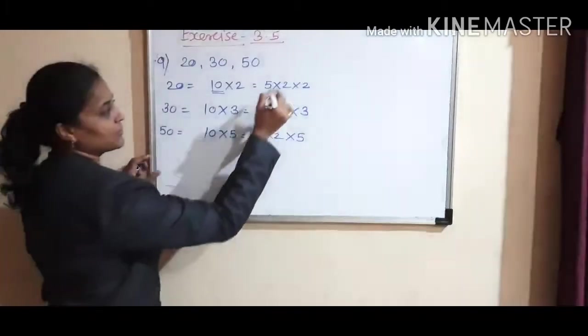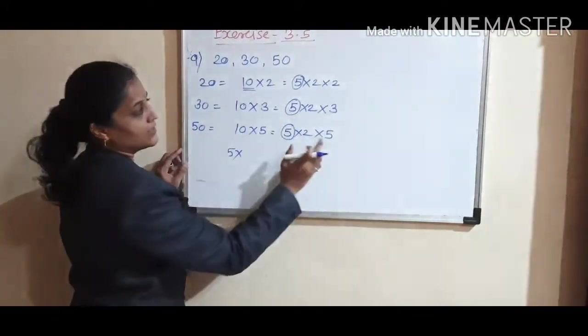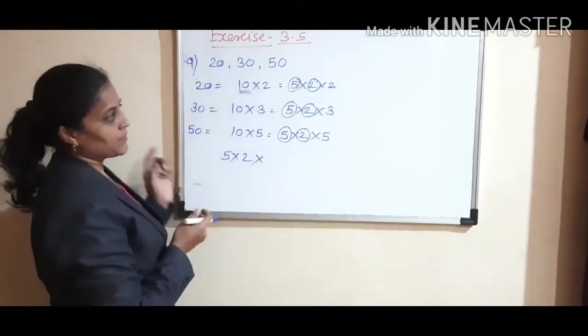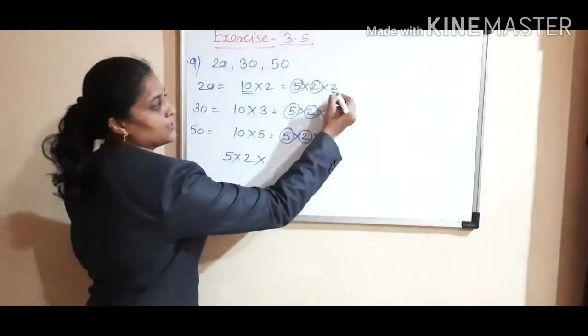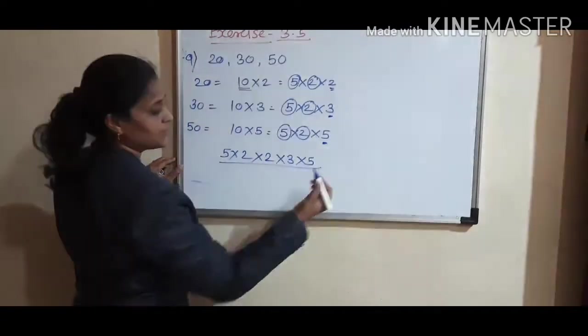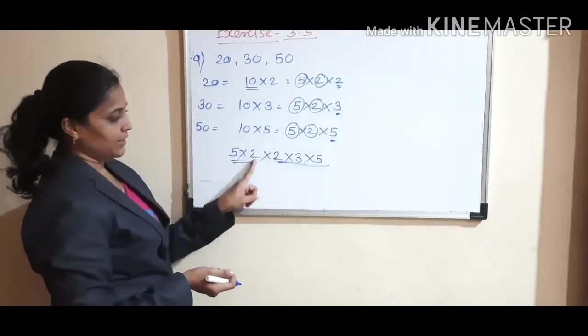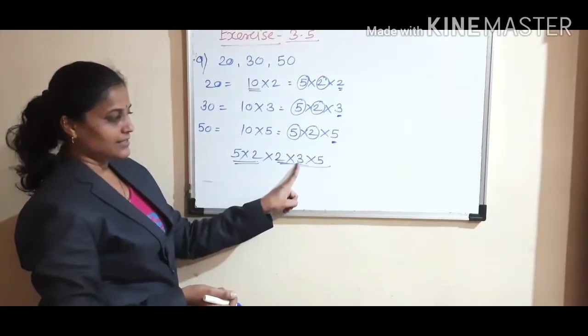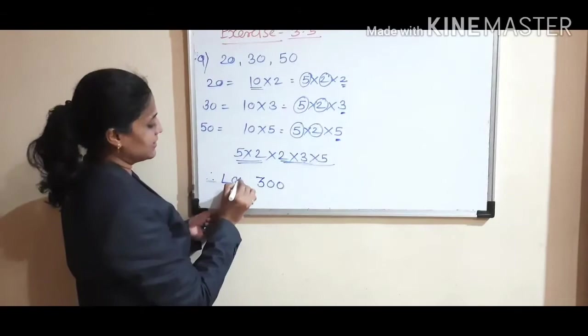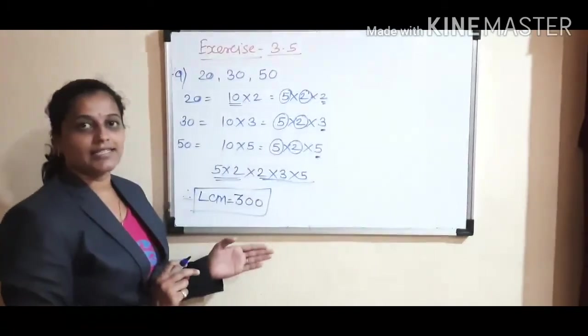First, find the common factors from each: one 5 and one 2 are common from all three. Now the remaining factors are 2, 3, and 5. Let's multiply: 5 times 2 is 10, 10 times 2 is 20, 20 times 3 is 60, and 60 times 5 is 300. Therefore, LCM equals 300. Like this, we can solve any example from this exercise.